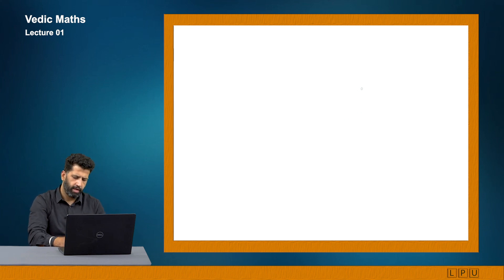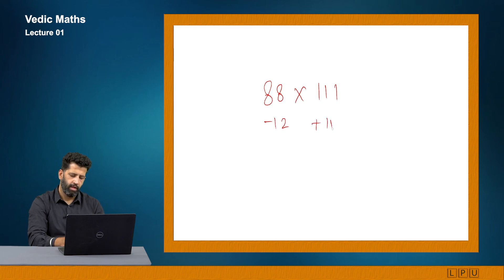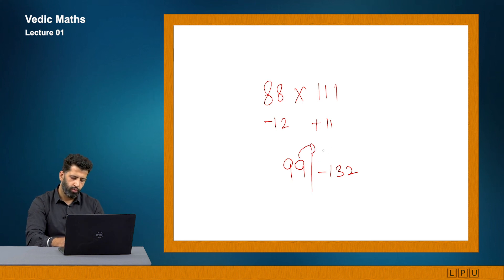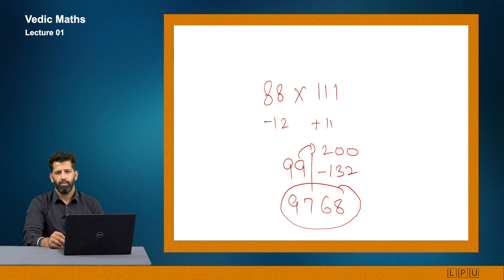For a more difficult case: 88 × 111. Differences are minus 12 and plus 11. Add 11 to 88: I get 99 (left part). On the right-hand side: minus 12 into 11 gives minus 132. Since I cannot deduct 132 from 100, I carry back 2 from the left (which equals 200). So 200 minus 132 gives 68 (right part), and 99 minus 2 gives 97 (left part). Answer: 9768.